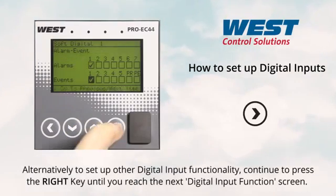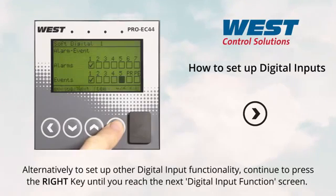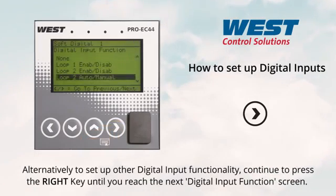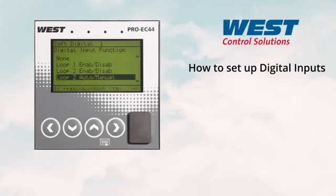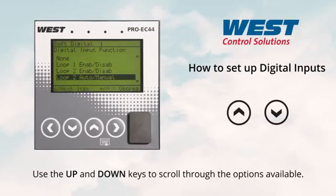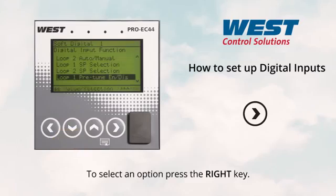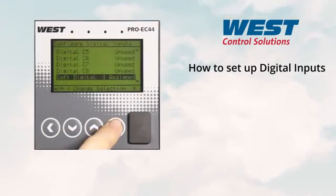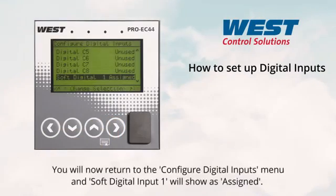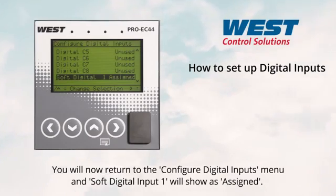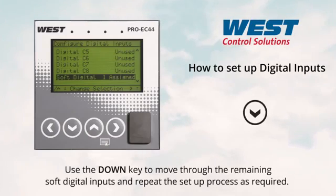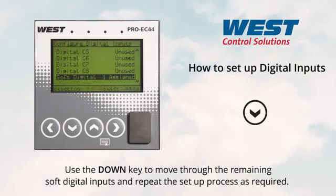Alternatively, to set up other digital input functionality, continue to press the right key until you reach the next digital input function screen. Here, use the up and down keys to scroll through the options available, then press the right key to select an option. You will now return to the configured digital inputs menu and soft digital input 1 will show as assigned. Use the down key to move through the remaining soft digital inputs and repeat the setup process as required.